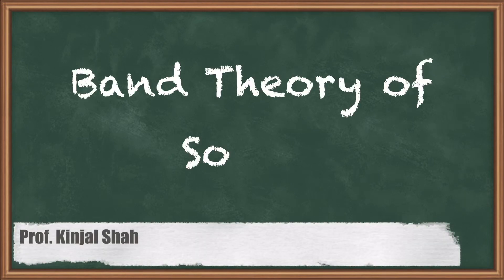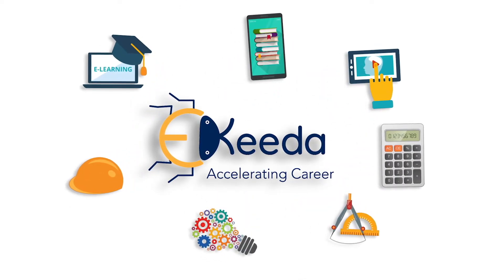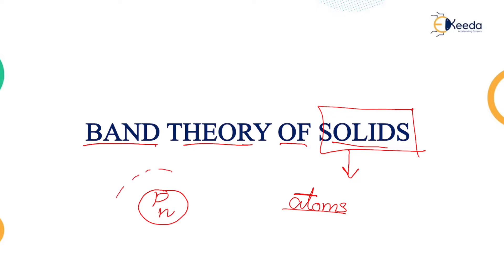Hello students, in today's class we are going to learn about band theory of solids, and we will be discussing solid state materials. Every solid state material is made up of atoms, and as we all know, atoms are made up of the nucleus which has the protons and the neutrons, and it has electrons which are orbiting around it. Today we are going to talk about the electrons which are present around it.